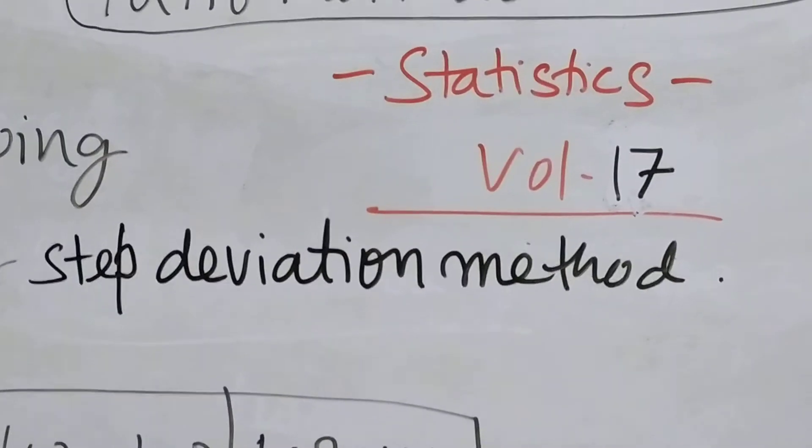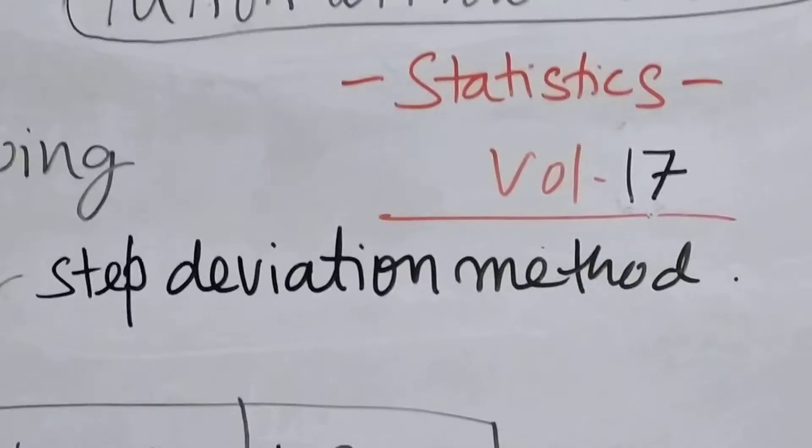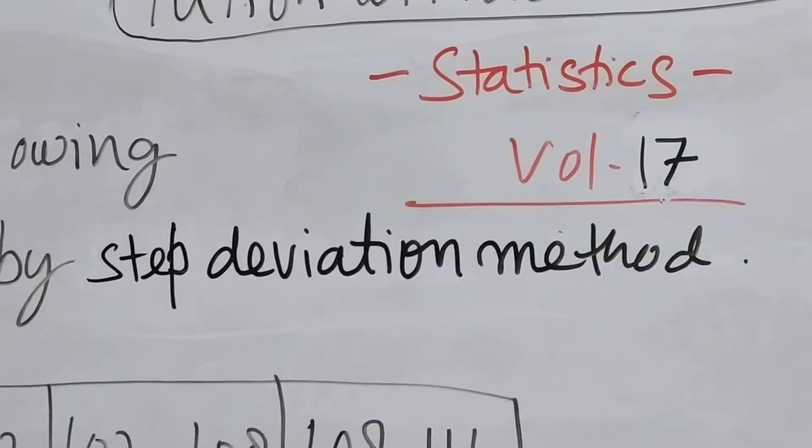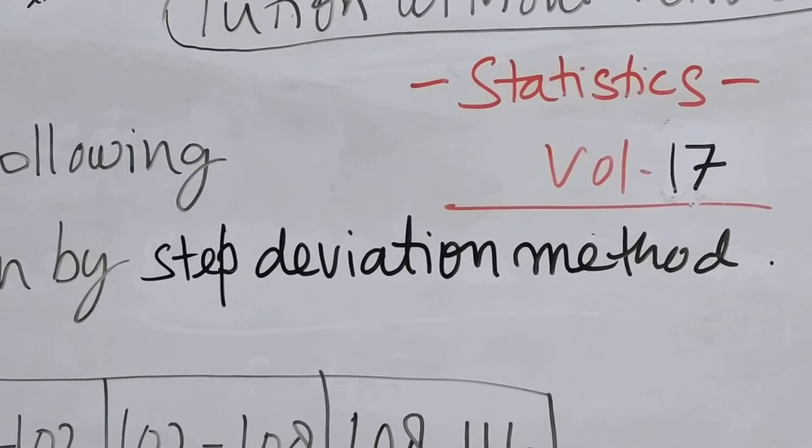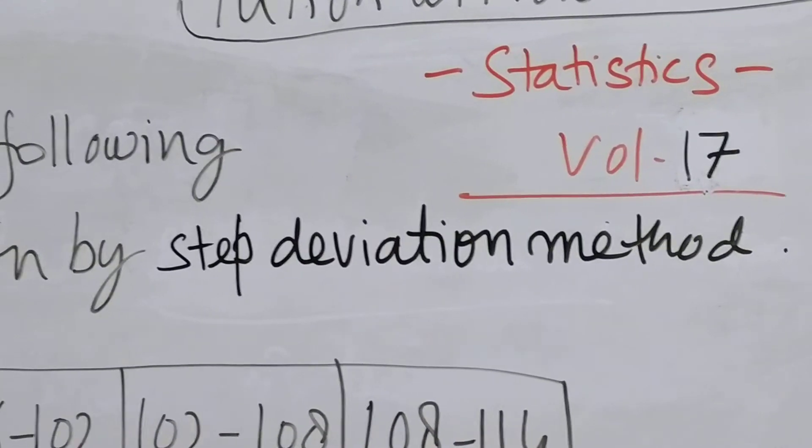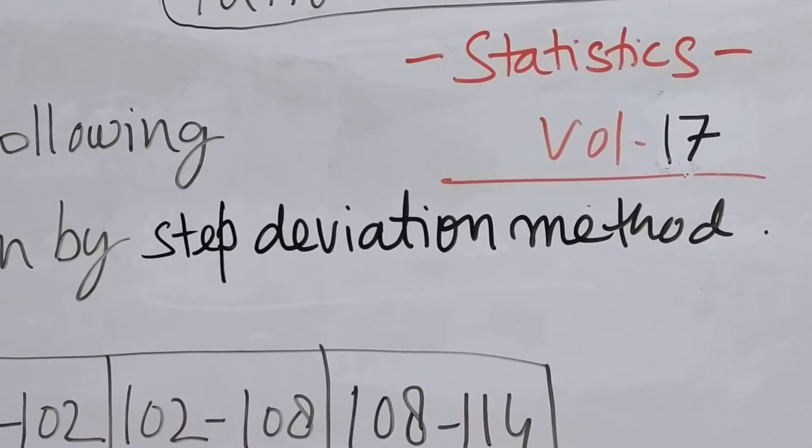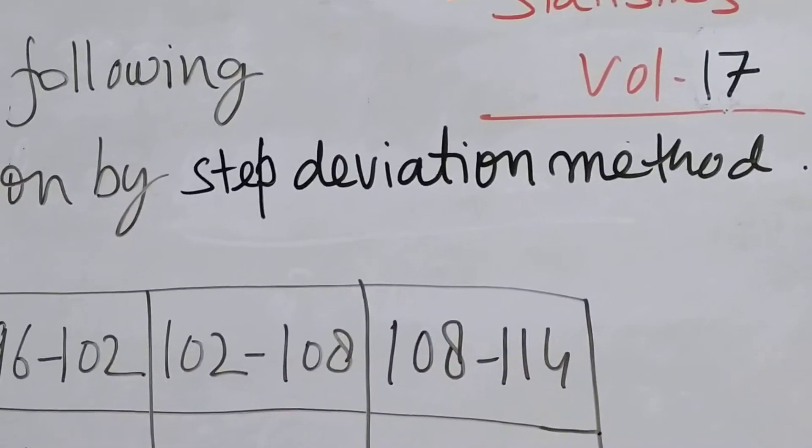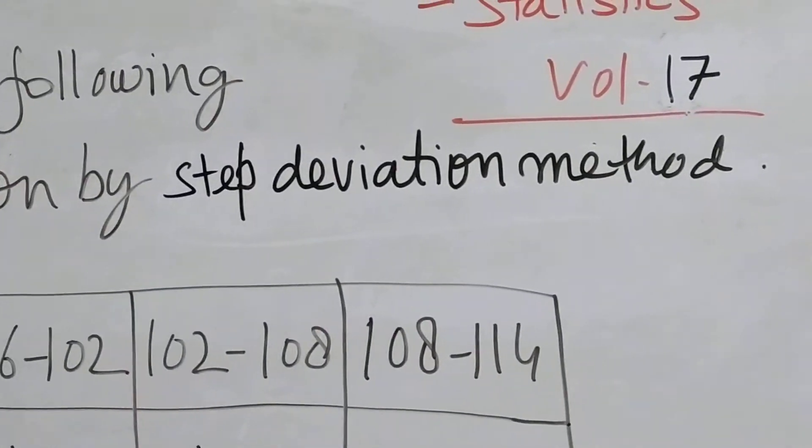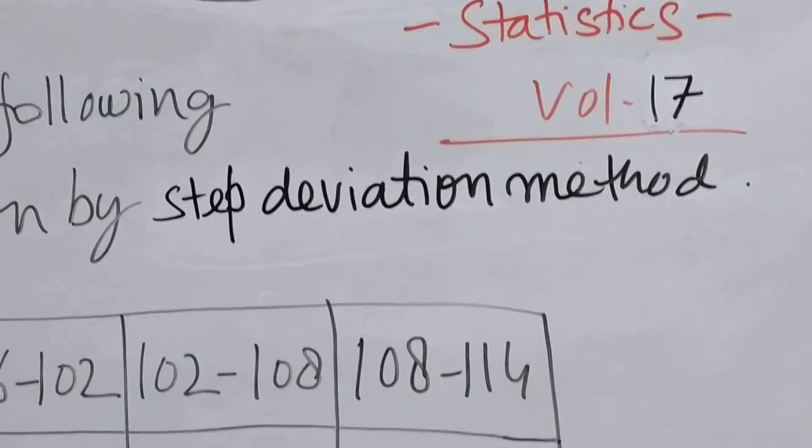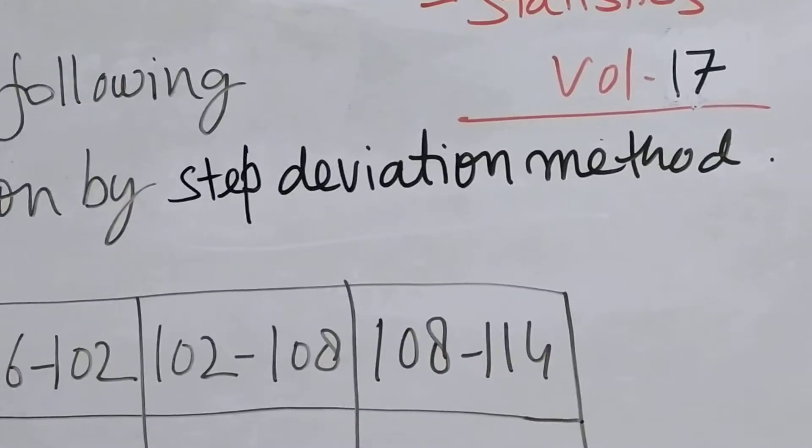When it is mandatory or it is given in the question that you have to solve the problem or calculate the mean by a particular method, whether it is shortcut method or step deviation method or anything else, then you have to follow that way. Otherwise, you have to calculate as per your choice.